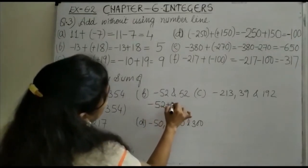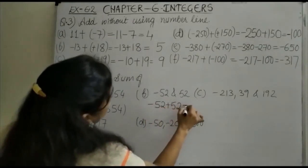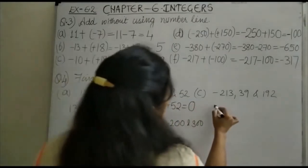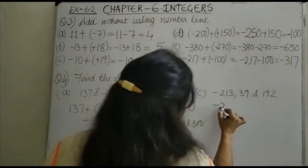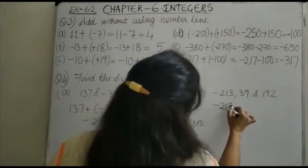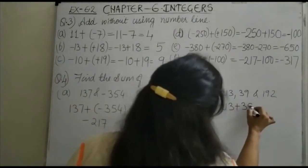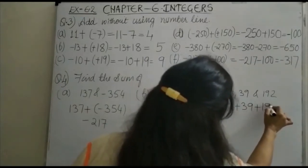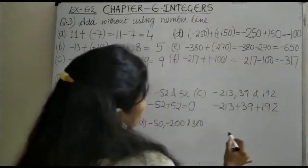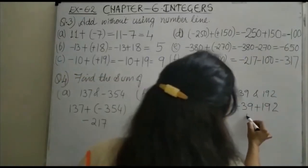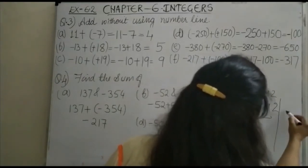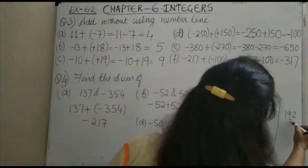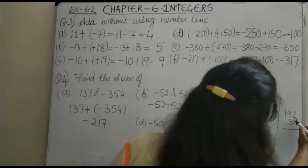Here we have -213 + 39 + 192. First, add the two positive numbers together. When you add 192 and 39, you get 231.